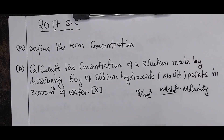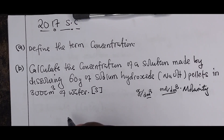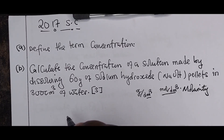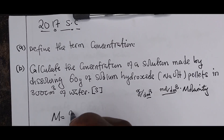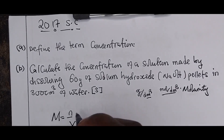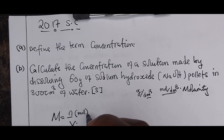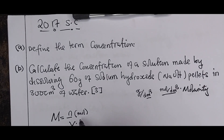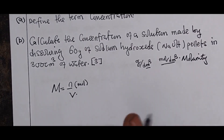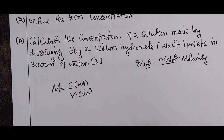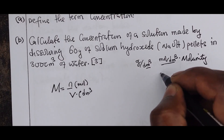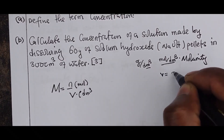Molarity or concentration is calculated using the formula: concentration equals number of moles divided by volume, where volume is in dm³. We are given a volume of 300 cm³.